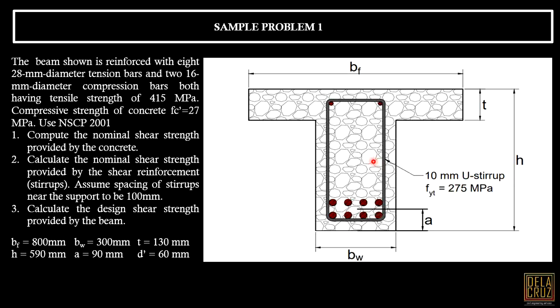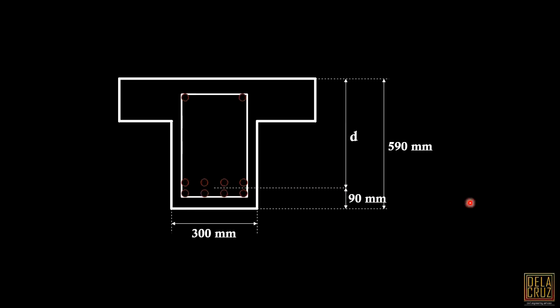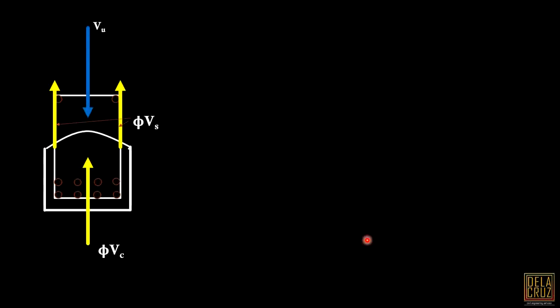We have the dimensions here. From the drawing, it's specified that these stirrups are 10mm diameter U stirrups - U stirrups because from this drawing it's formed in a U shape. FYT is the specified yield strength capacity of the stirrups. That is the drawing. We will be needing this effective depth, which is where the plastic centroid of the reinforcement tension bars is located. That must be at the center because the diameter is the same. We can compute d by looking at this figure - 590 minus 90.